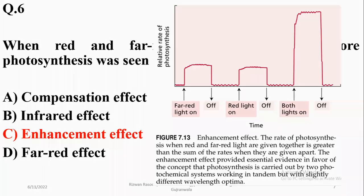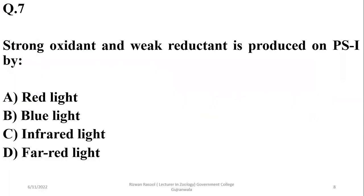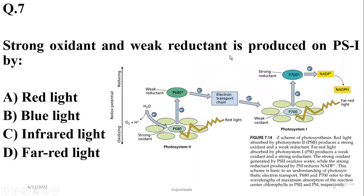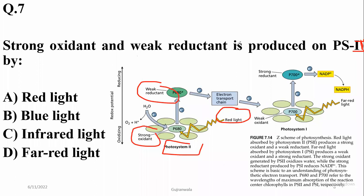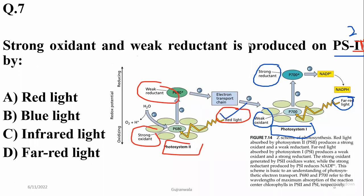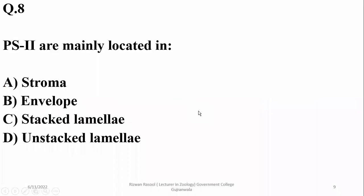Question seven: Strong oxidant and weak reductant is produced in photosystem two with red light. With photosystem one, far-red light produces a strong oxidant and strong reductant. So if you have photosystem two with red light, the right option is alpha.